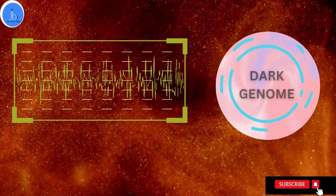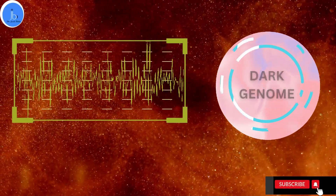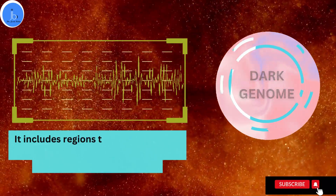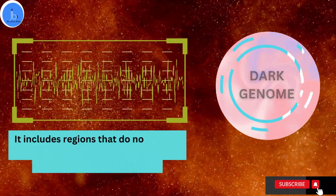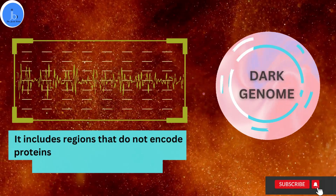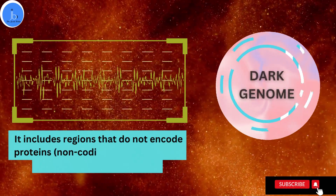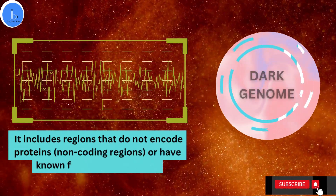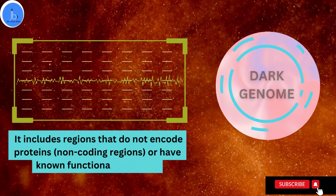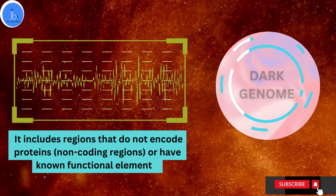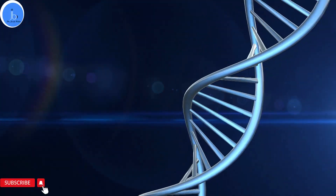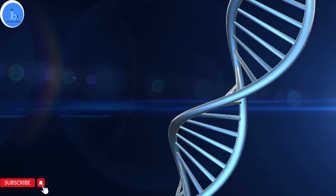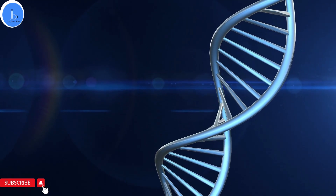Let's begin the session with the dark genome first. The dark genome refers to the portion of an organism's genome that has not yet been fully characterized or understood, especially in terms of its functionality. It includes regions that do not encode for protein — i.e., the non-coding regions — or have no known functional element.